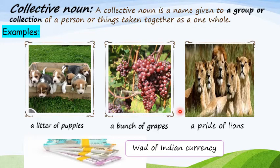Very good, children. What do you call a lot of cards together? A pack of cards. Very good. Let's take one more example. If you see a lot of honey bees together in a group, what would you call it? A swarm of bees. Very good. So you are all clear with different collective nouns.